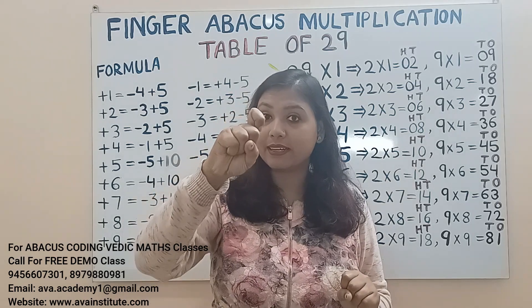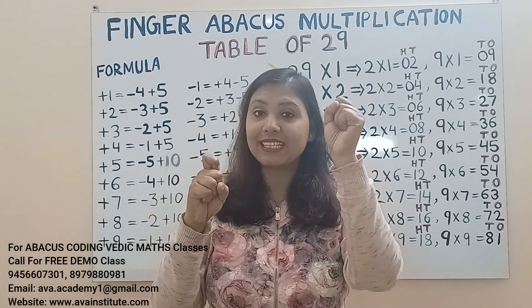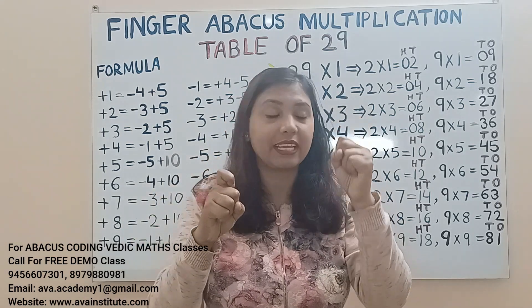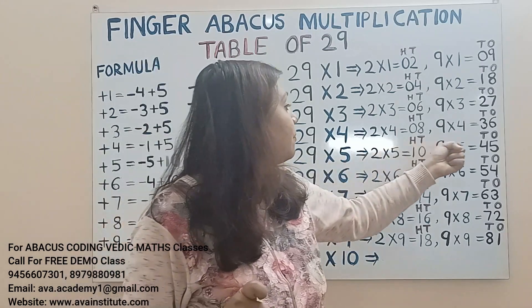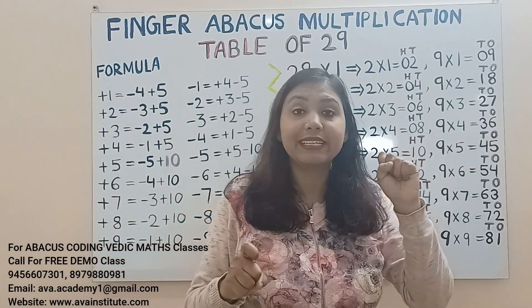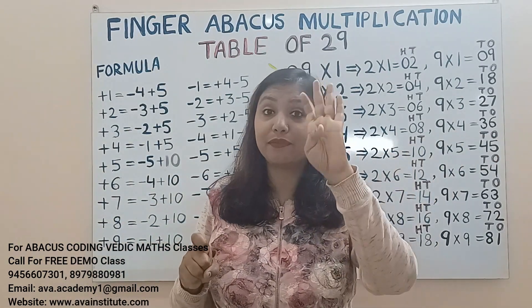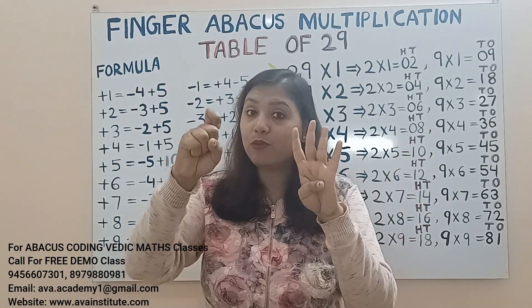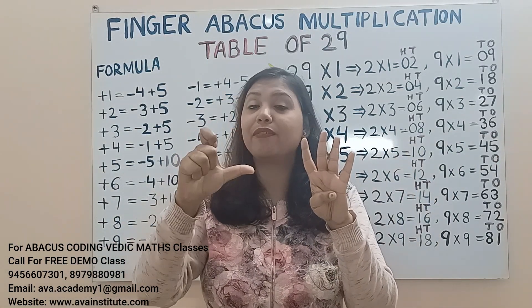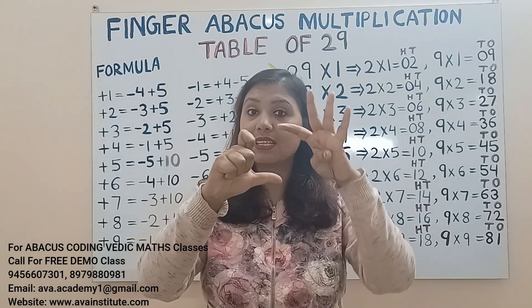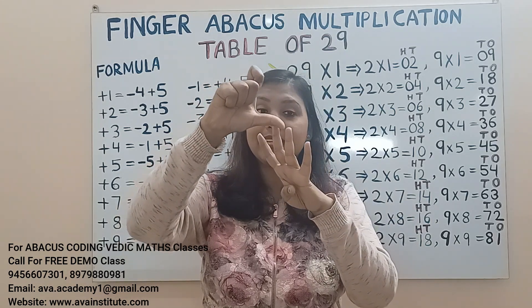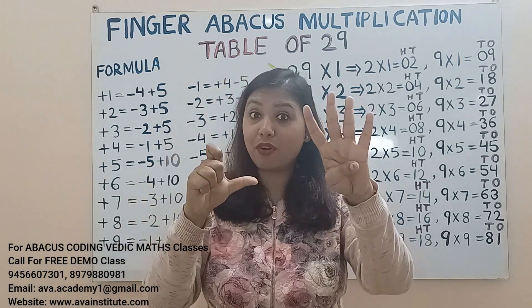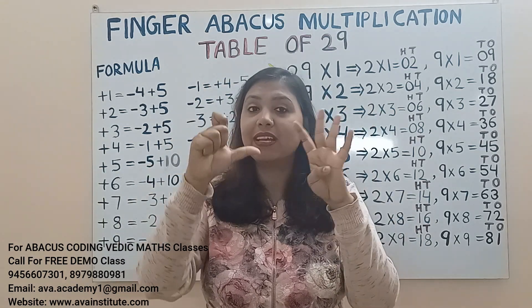Next, 29 fives. 2 fives are 10 — represent 1 in hundreds and 0 in tens. 9 fives are 45 — add 40 in tens and 5 in ones. The answer is 100, 10, 20, 30, 40, 45 — 145 is the answer.